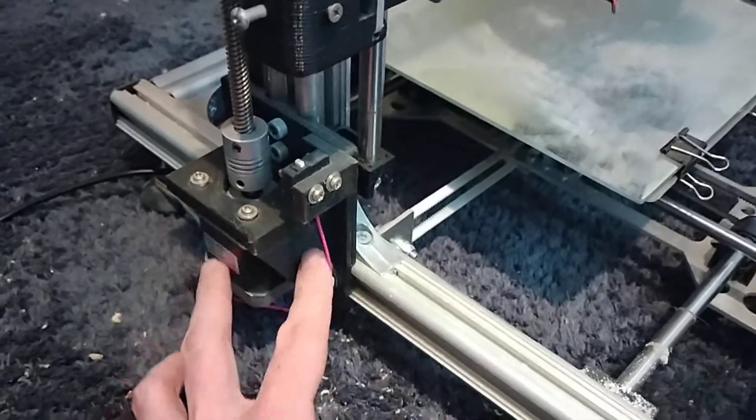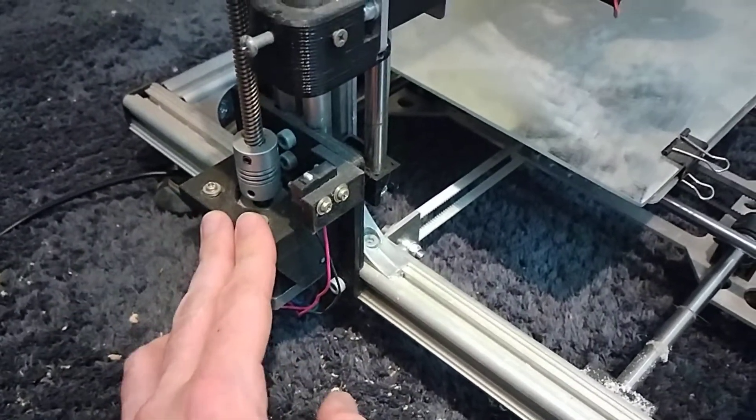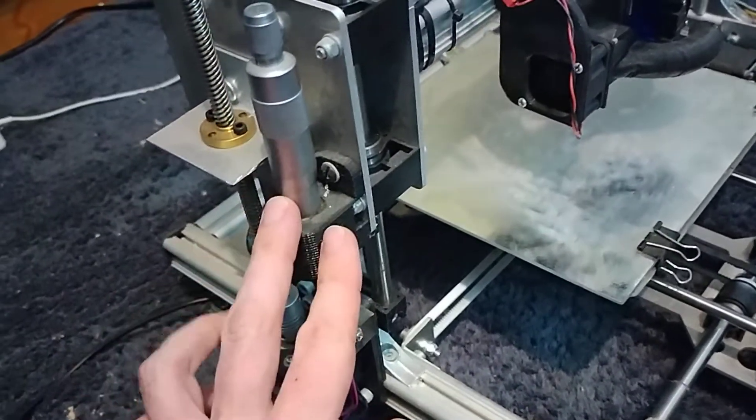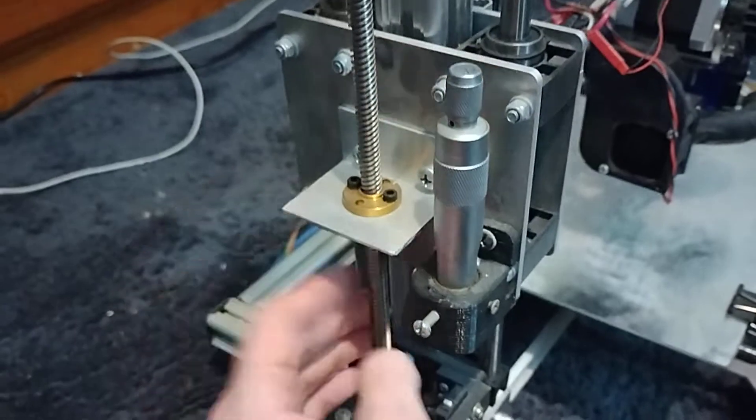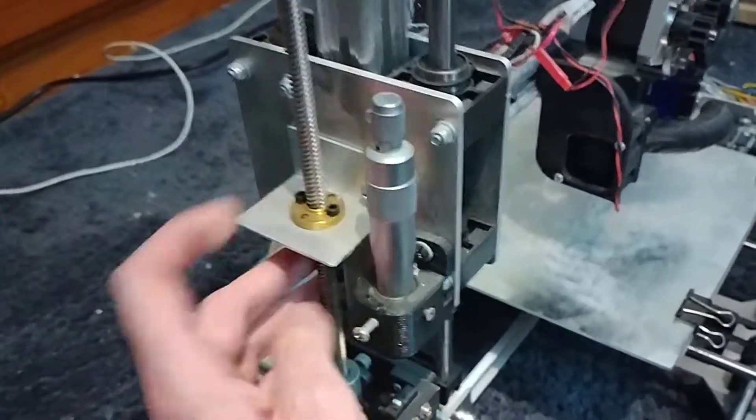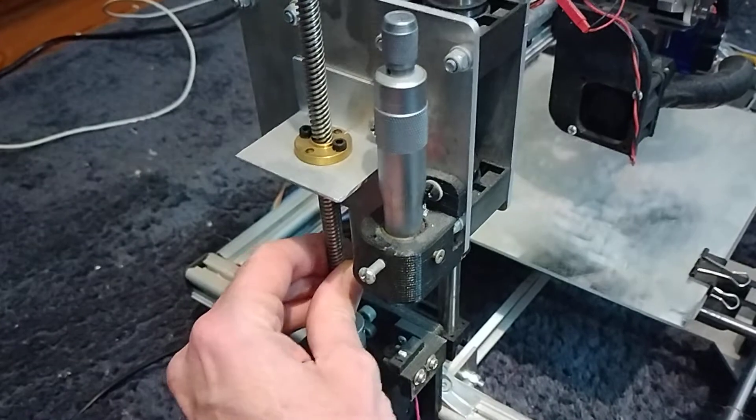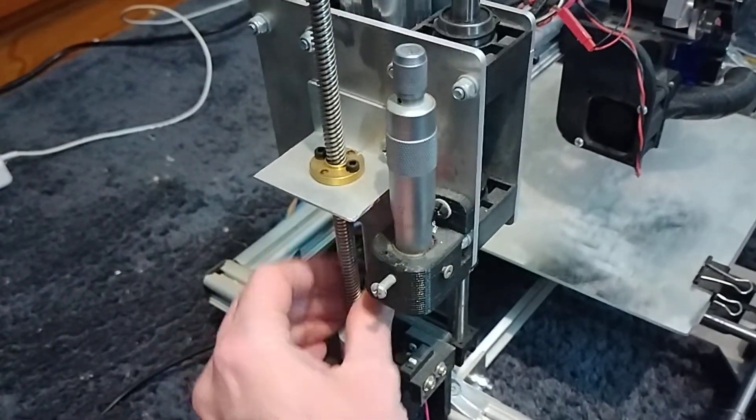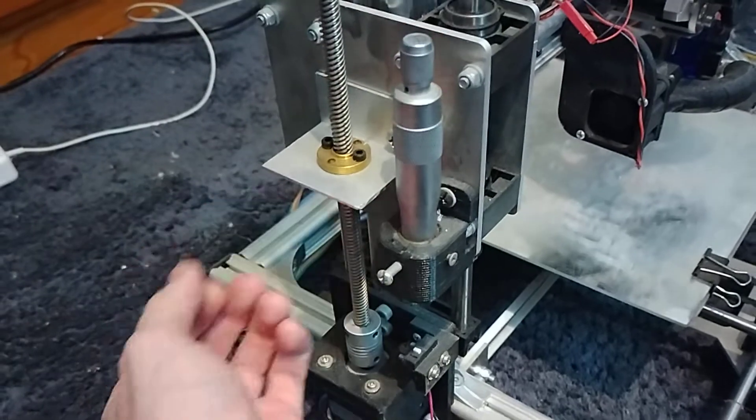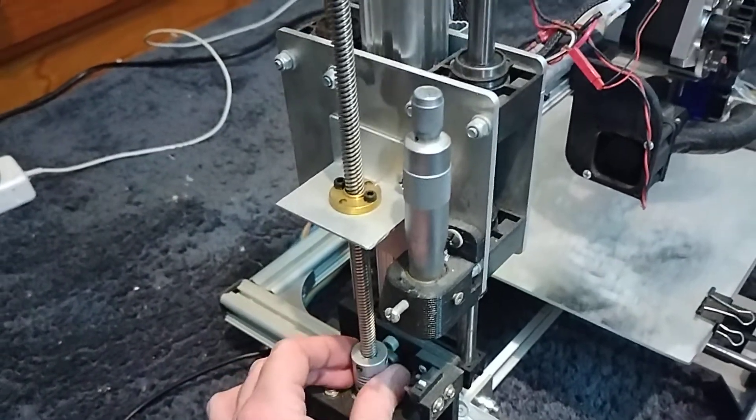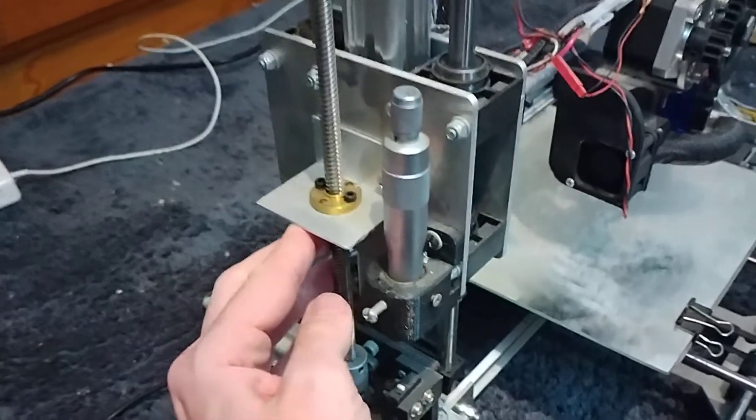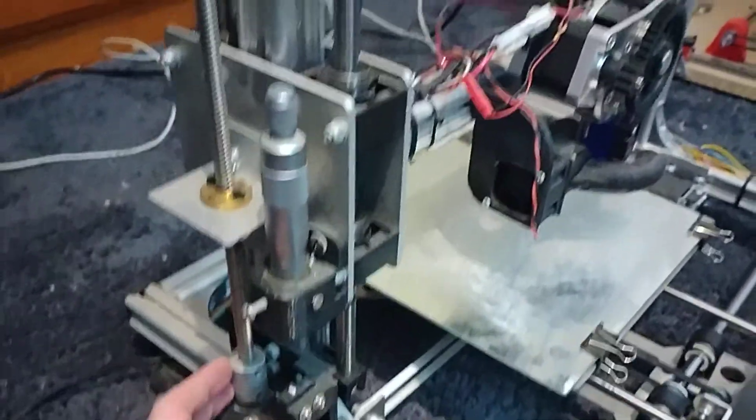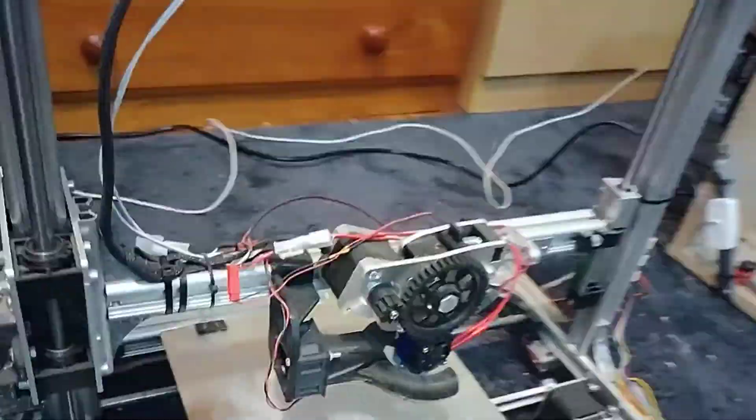I've got this z-axis mount which is custom, got this which is custom. The original K8200 had just like an M8 threaded rod and like a regular nut kind of thing, but I more recently upgraded this to an actual lead screw so that helped a lot.